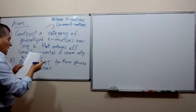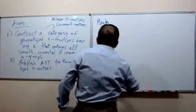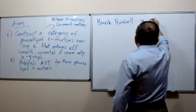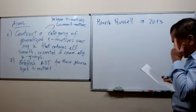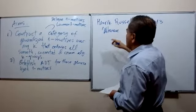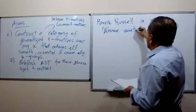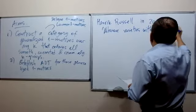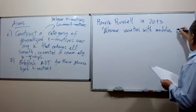Henrik Russell did this in 2013. His paper is called something related to Albanese — he defined a category like that because he was interested in defining Albanese varieties with modules, generalizing the generalized Jacobians that are well known from the 1960s, over a perfect field.